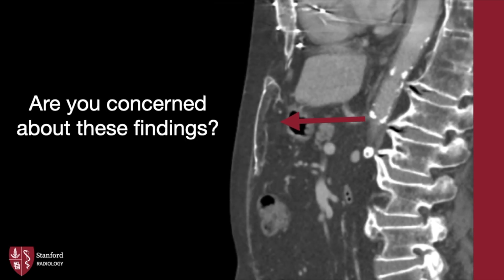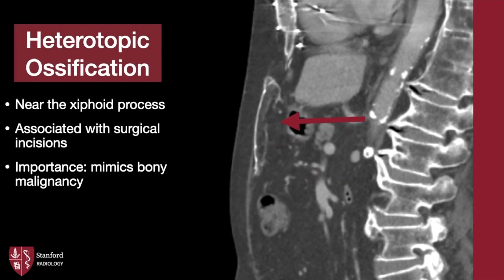For our companion case, are you concerned about these findings? In the region of the xiphoid process again, there is a well-corticated ossification. Unlike the last case, however, there is no osseous or chondroid matrix. This is heterotopic ossification — it's commonly seen near the xiphoid process, especially after surgical incisions. Note the median sternotomy wires here. Abdominal surgeries can also be associated, as the rectus abdominis muscles attach to the xiphoid process.